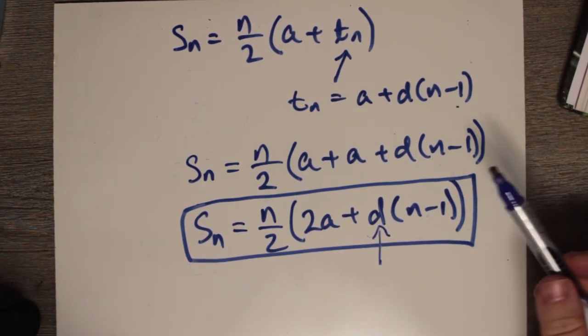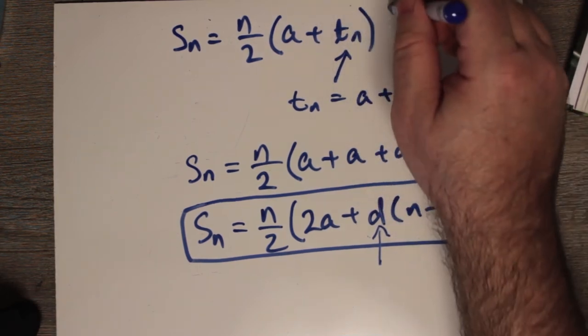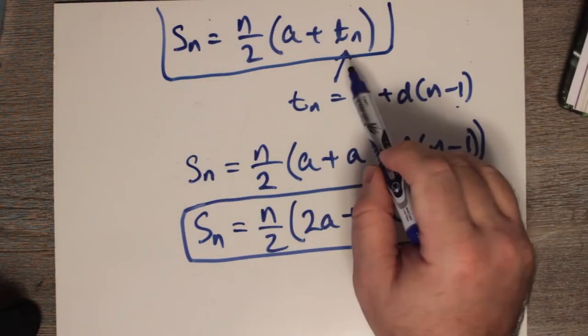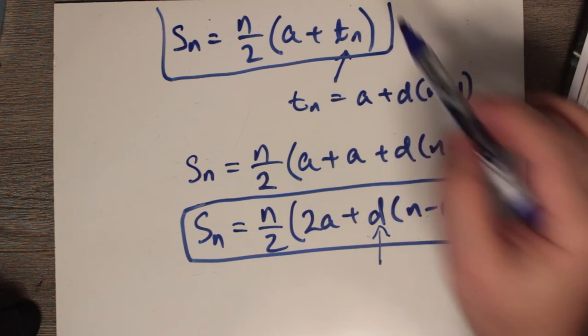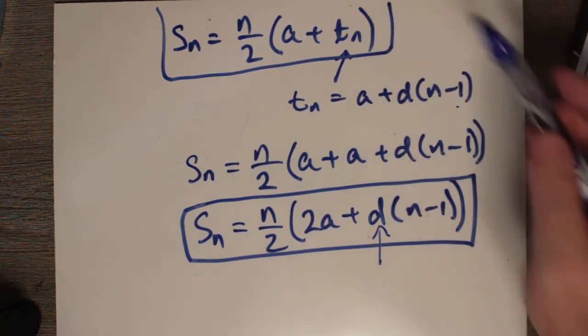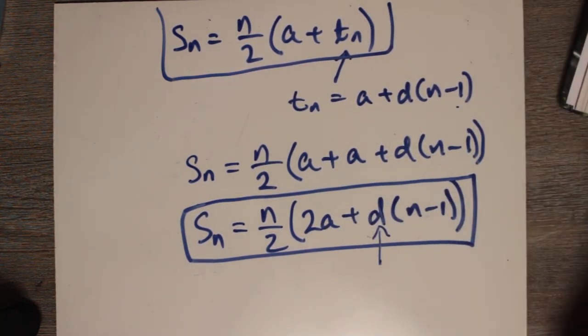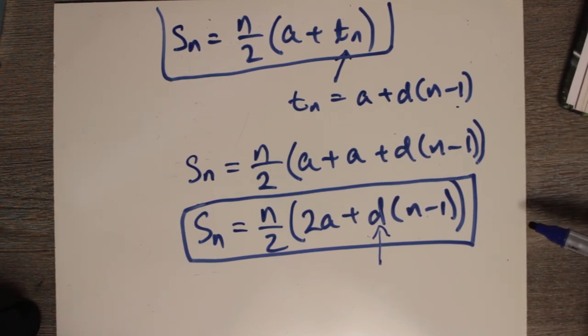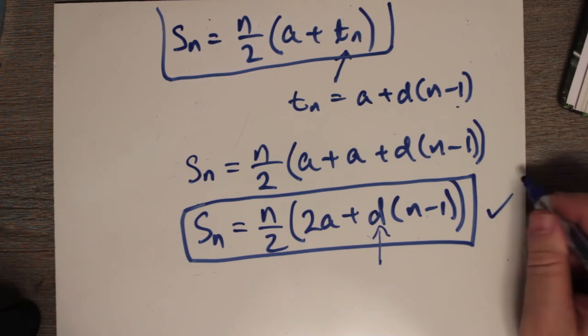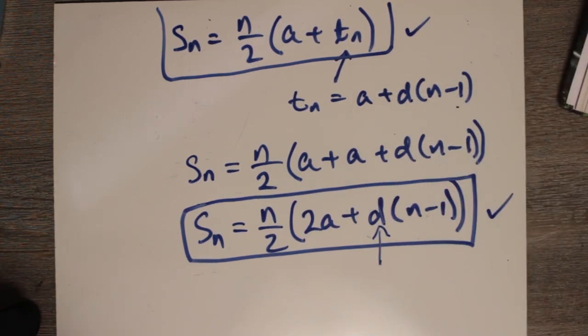It seems you always need to know three bits of information, whether it's the formula where you need to know n and a and tn (the last term), or n and d and a. Either way you need to know three pieces of information, but at least you've got two different ways with three slightly different pieces of information that you could use to find the summation of a series.